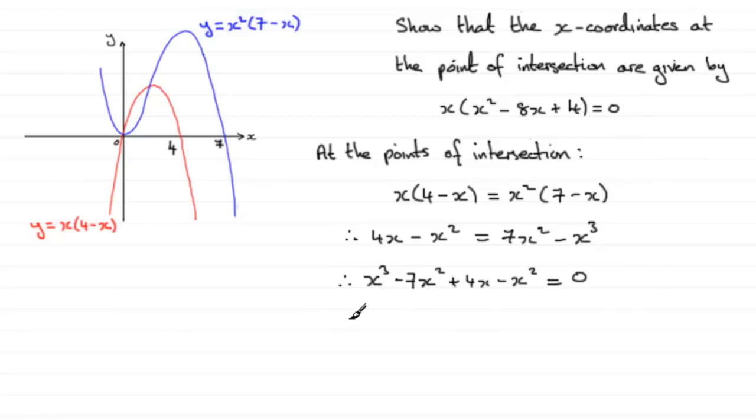So if we group up the x² terms, we've got x³, and now -7x² minus another x² is -8x², and then plus that 4x, and that equals 0.